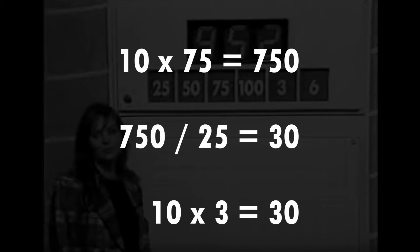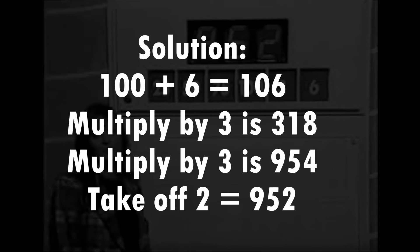So because 25 divides into 75 by 3, we can multiply our number by 3 using the 75 and the 25 in that way.